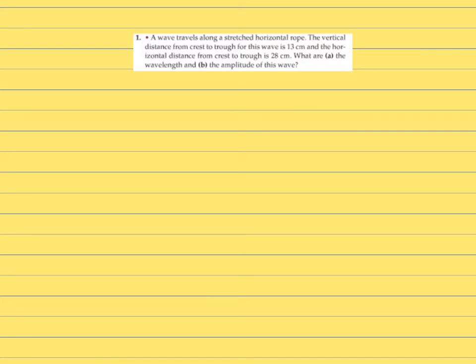For our first problem we are just going to look at some really basic vocab. So to start this problem you need to draw it out. So a wave travels along a stretched horizontal rope. The vertical distance from crest to trough for this wave is 13 centimeters and the horizontal distance from crest to trough is 28 centimeters. What is the wavelength and the amplitude of the wave? So let's just draw out a nice little wave here, okay? And let's try to fill in what's going on.